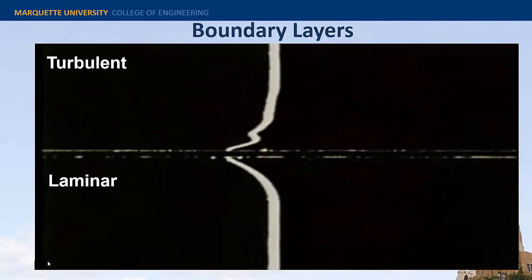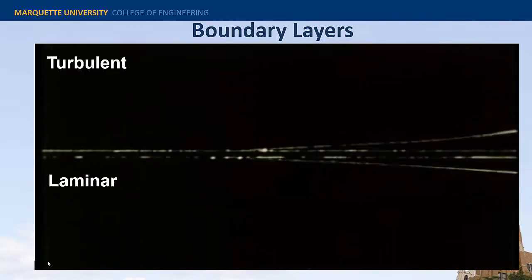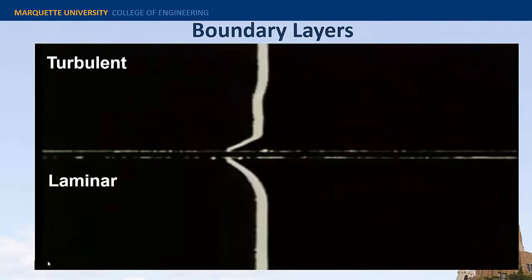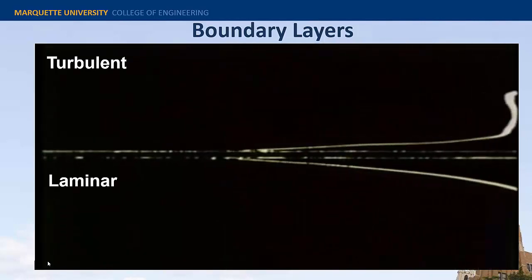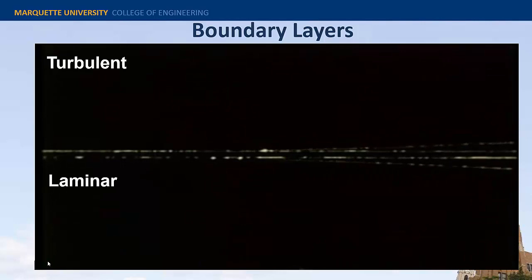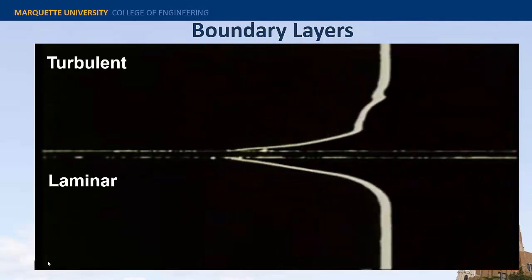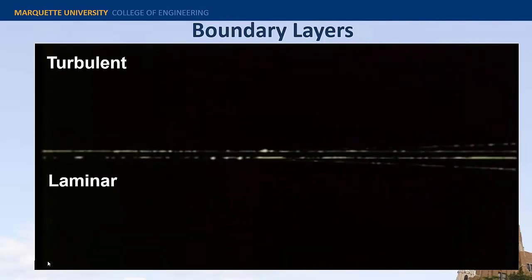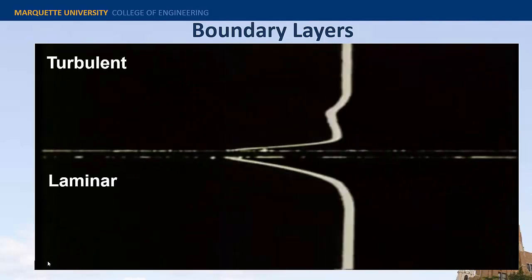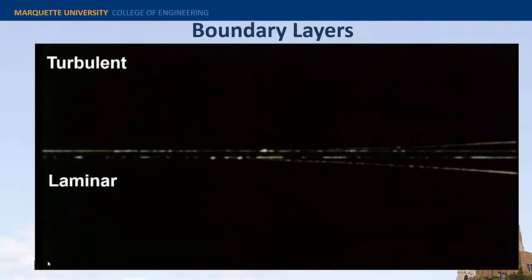The boundary layer on the bottom side is laminar and two-dimensional. On the top side the boundary layer has been tripped by a wire placed well upstream. Unsteady motions in the turbulent boundary layer are three-dimensional - some of the motions are perpendicular to the plane of view.